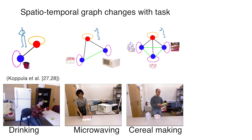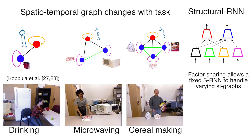In human-object interactions, the spatiotemporal graph changes with the environment and tasks. sRNN handles such applications by sharing RNNs between semantically similar nodes and edges.